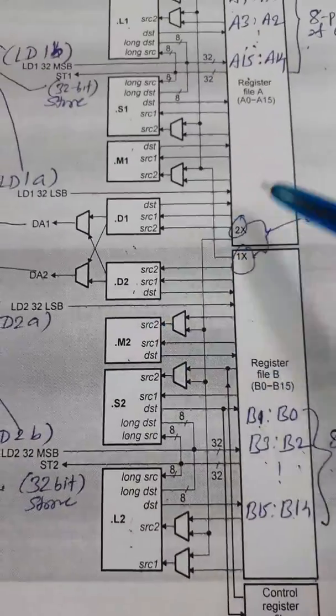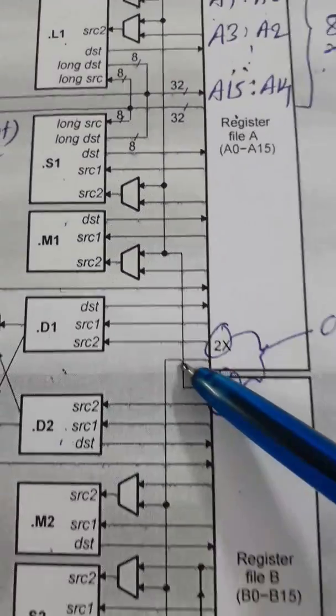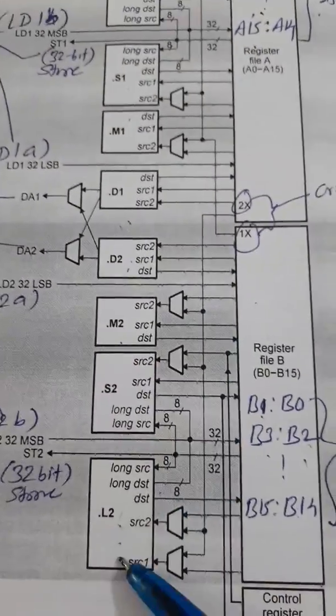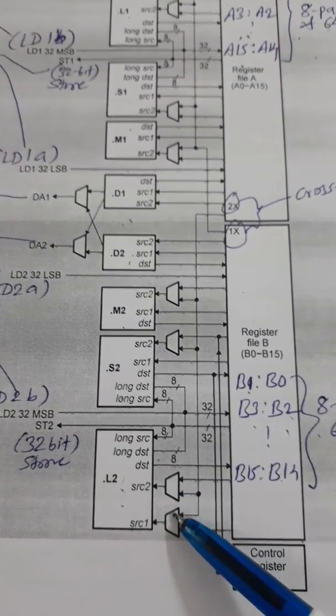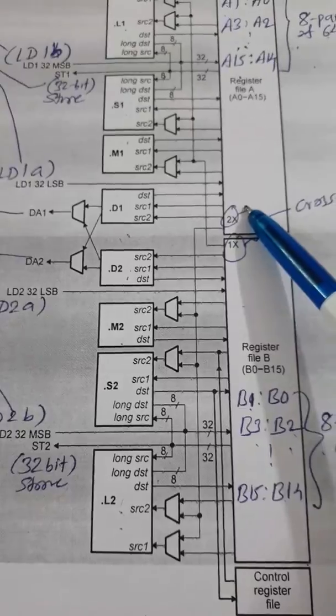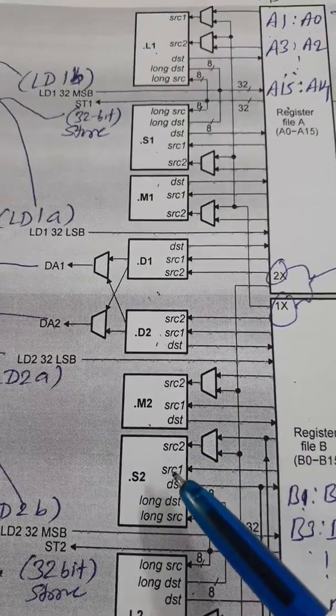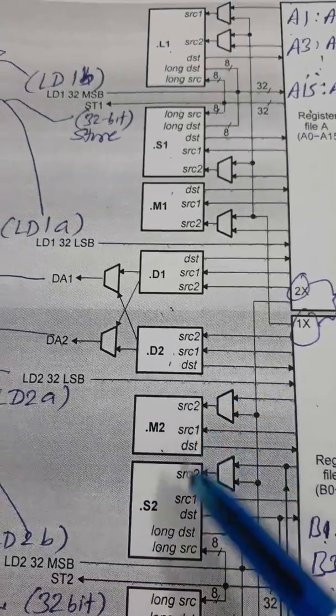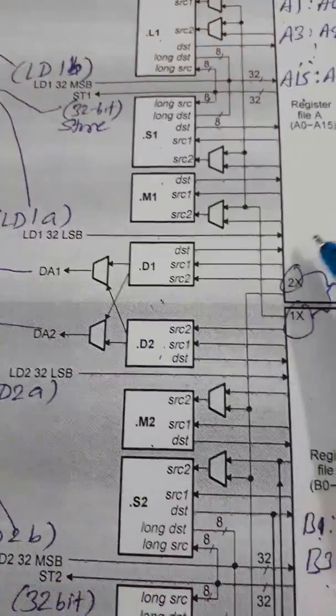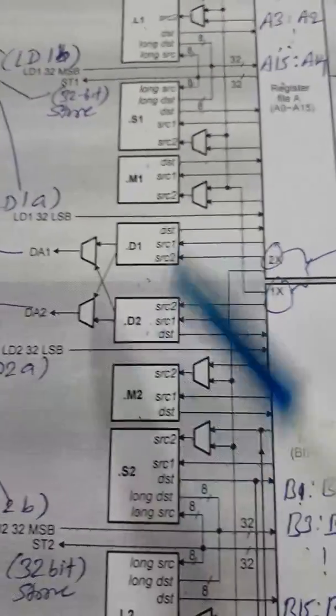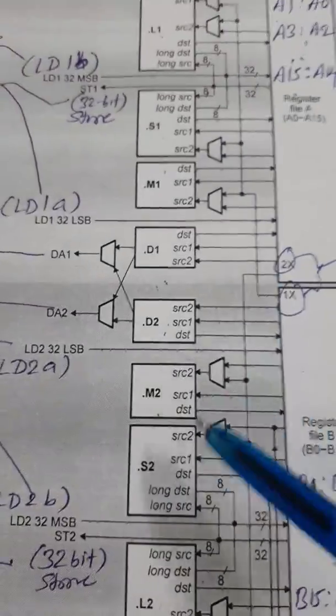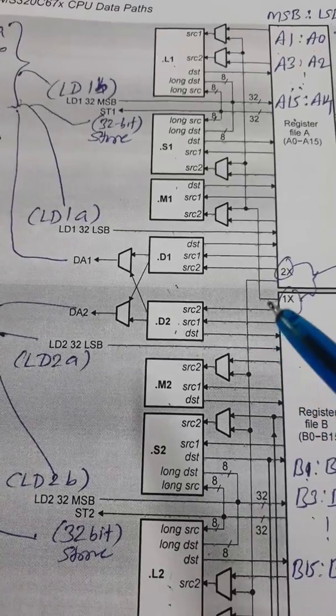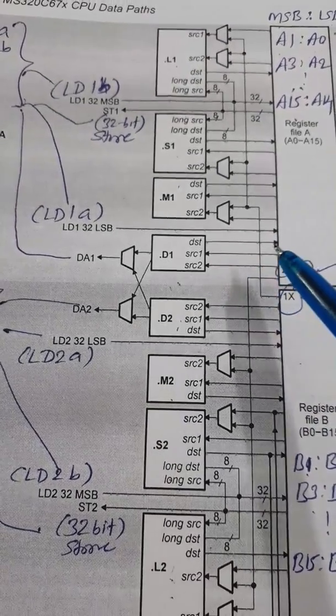Same way, identically, that means there is another 2x cross path available that is identically providing the same situation over here. That L2 has access to SRC1 and SRC2 from path A, and these other 2 units, that is M2 and S2 have access of SRC2 from path A. So that is also identical. This is the data path, and all these things are of course 32-bit standard.